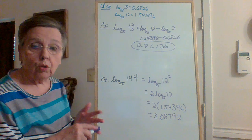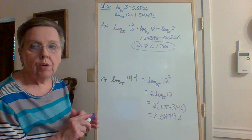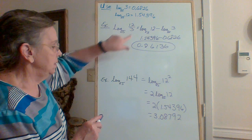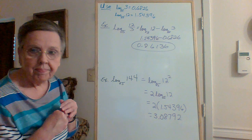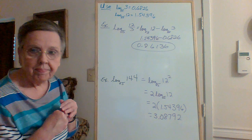That's the laws of logarithms with the product, quotient, and powers. Product is when you multiply, quotient is when you divide, and powers is when you have an exponent. These are some examples that hopefully will be helpful. There are other examples in your book — please refer to them if necessary. Good luck with your assignment.